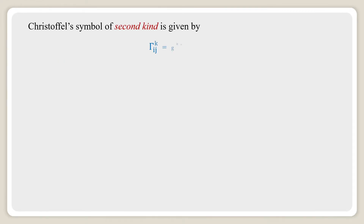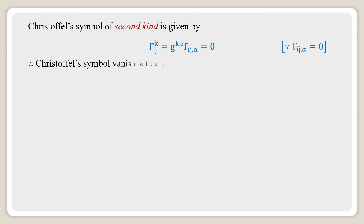The Christoffel symbol of the second kind is given by Γk_ij = G^(kα) · Γij,α, which is also equal to 0, because the Christoffel symbol of the first kind, Γij,α, is equal to 0. Therefore, the Christoffel symbol of the second kind is also equal to 0.